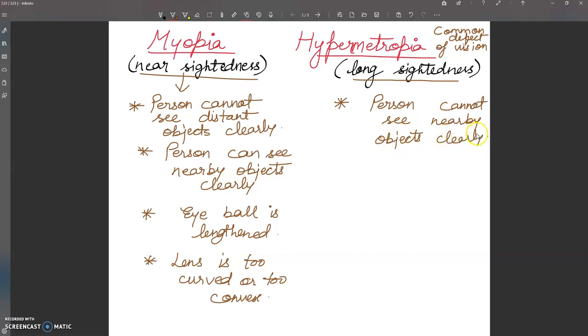In hypermetropia, the eyeball is shortened. The other thing here is that the lens is too flat and less curved.